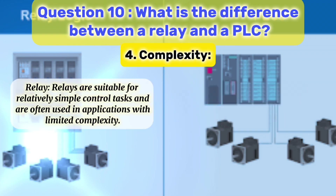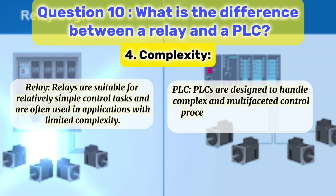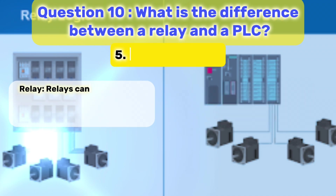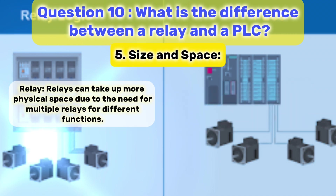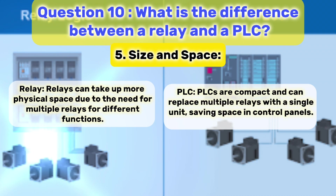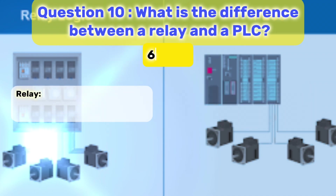4. Complexity. Relays are suitable for relatively simple control tasks and are often used in applications with limited complexity. PLC: PLCs are designed to handle complex and multifaceted control processes commonly found in industrial automation. 5. Size and space. Relay: Relays can take up more physical space due to the need for multiple relays for different functions. PLC: PLCs are compact and can replace multiple relays with a single unit, saving space in control panels.